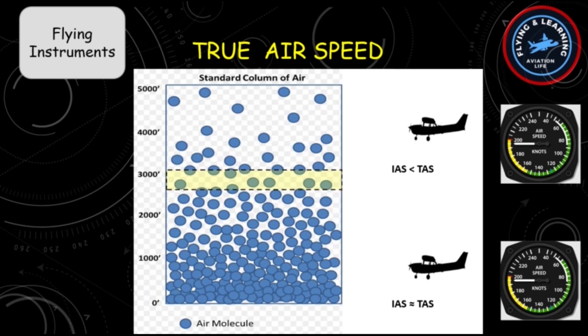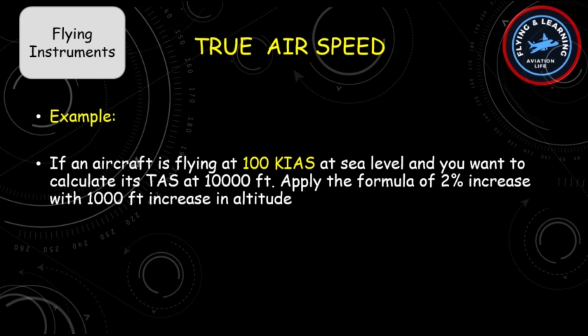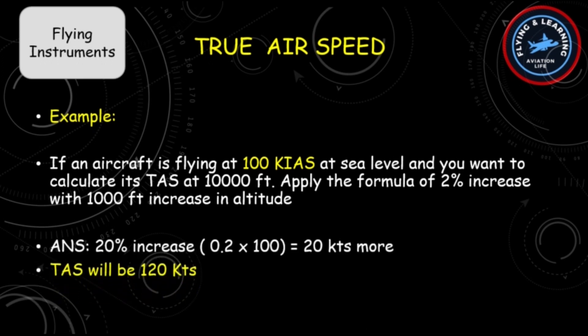Let's take an example: one aircraft is flying at sea level with 195 knots of indicated airspeed, and another aircraft is flying with the same indicated airspeed but at 5,000 feet of altitude — its true airspeed will be more. The rough formula is that TAS increases by 2% with every 1,000 feet increase in altitude. For example, an aircraft flying at 100 knots indicated airspeed at sea level will have a true airspeed of 120 knots at 10,000 feet.